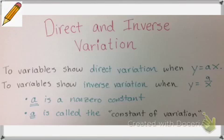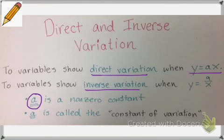So two variables are considered to show direct variation if they look like this: y equals ax. Notice that a is defined as a non-zero constant, so it could be like y equals 2x or y equals one half x. The idea is that the a value is the same for the entire function, and we call that a value the constant of variation. If it's in the form of y equals ax, it's direct variation. And if it's in the form of y equals a divided by x, it's called inverse variation.